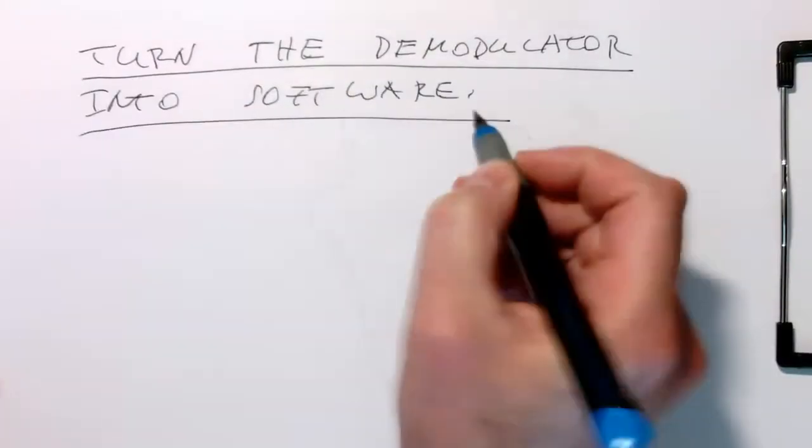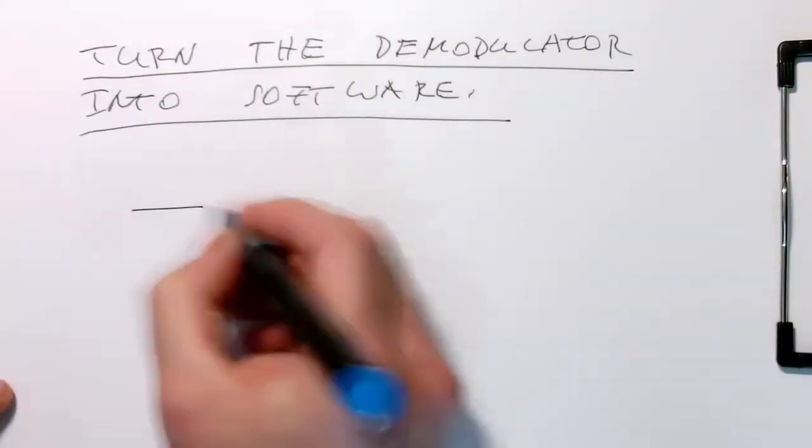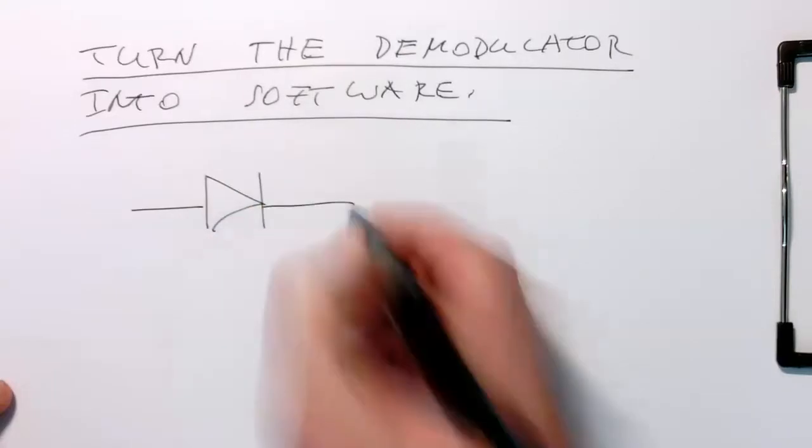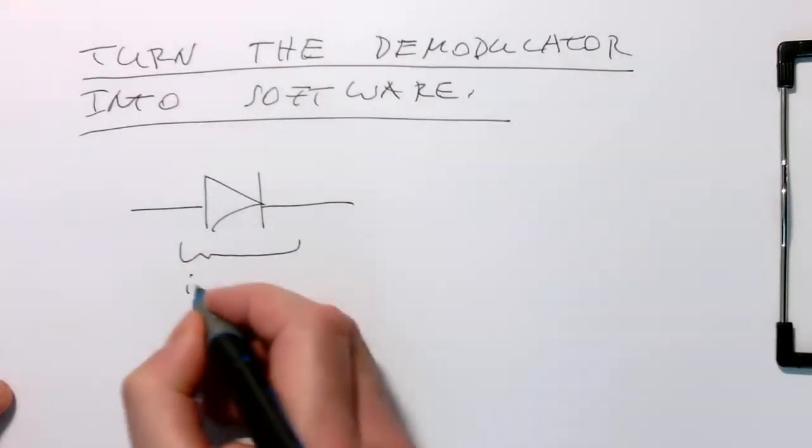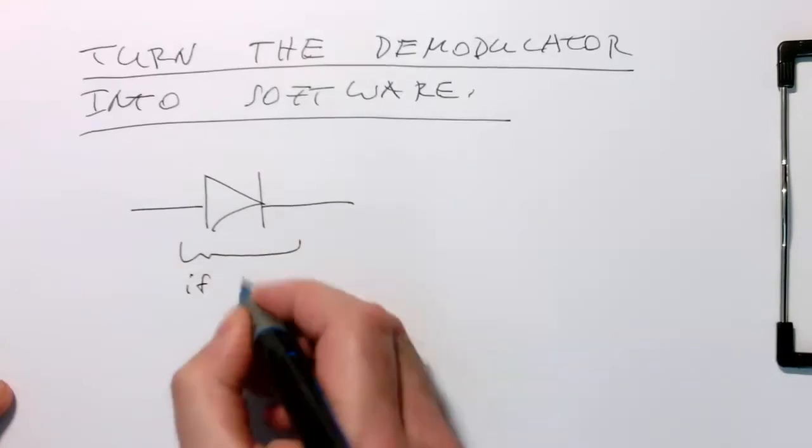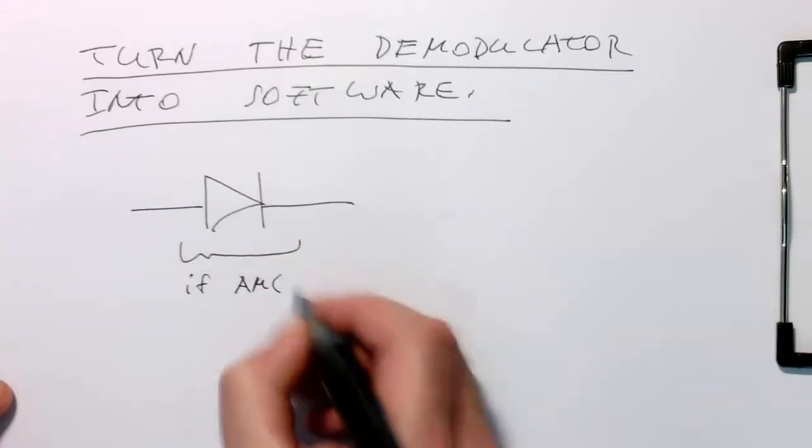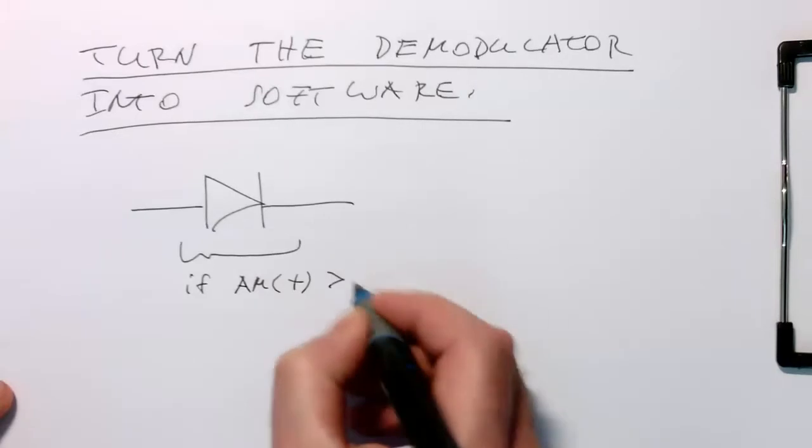So how do we do this? If we think of the diode, that's obviously just an if clause. So if this AM signal of t is greater than zero...